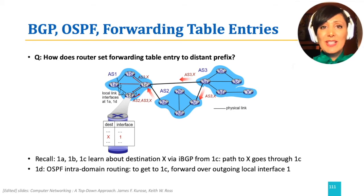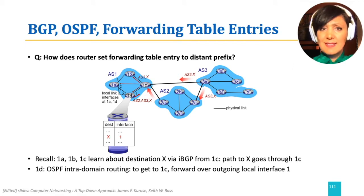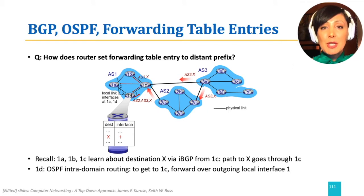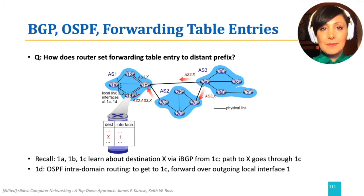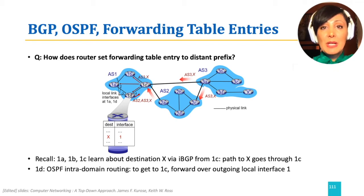An interesting question: how does a router set forwarding table entries to a distant prefix? Recall our previous example, where 1a, 1b, and 1c within AS1 learned about destination x via IBGP from 1c. 1c tells 1d that the path to x goes through 1c. But how does 1d reach 1c? This is decided by OSPF intra-domain routing, telling how to get to 1c through forwarding over outgoing local interface 1.